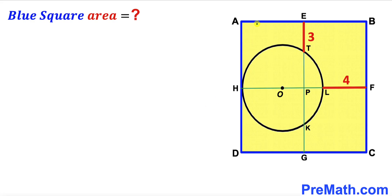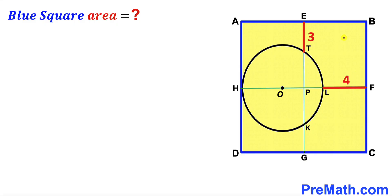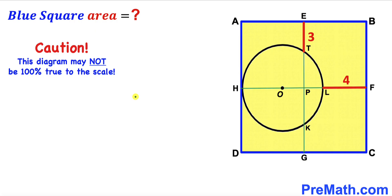Welcome to pre-math. In this video we have got this blue square ABCD and a circle with center O put together as shown in this diagram, such that points E, F, G and H are the midpoints for the sides of this blue square. As a result we get two lines: this perpendicular line EG and this horizontal line HF, and they intersect each other at point P. Furthermore, segment ET has length 3 units whereas segment LF has length 4 units, and our task is to calculate the area of this blue square ABCD. Please keep in mind that this figure may not be 100% true to scale.